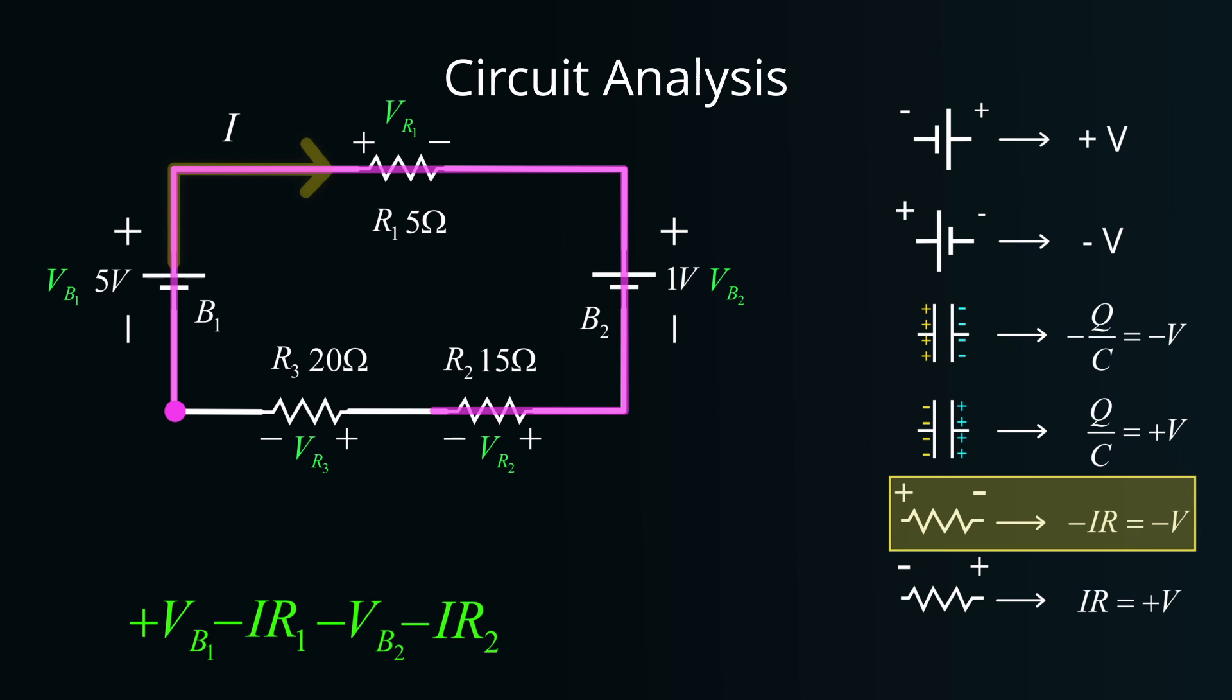As we proceed, we encounter the third resistor, R3. Again, the voltage drop across R3 due to the direction of current flow will be minus I times R3. Finally, completing our loop and returning to our starting point, according to Kirchhoff's voltage law, the sum of these voltages must equal zero.